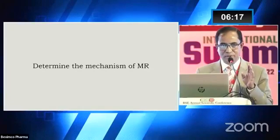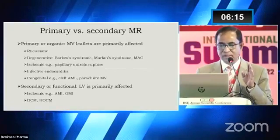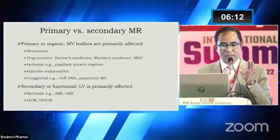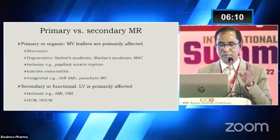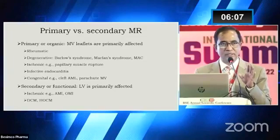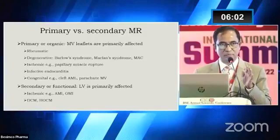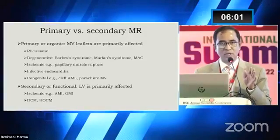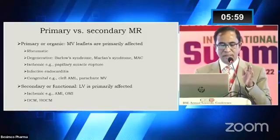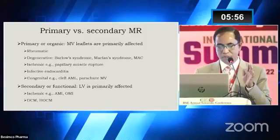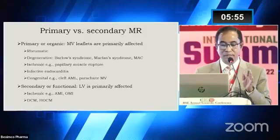The next important thing is to determine the mechanism of mitral regurgitation, which is somewhat difficult and requires much practice. The first step is to differentiate between primary and secondary mitral regurgitation. Primary MR means the MR is due to the mitral valve apparatus itself — it may be the leaflet, the chordae, or the papillary muscle. Secondary MR means it is due to an abnormality of the left ventricle itself.